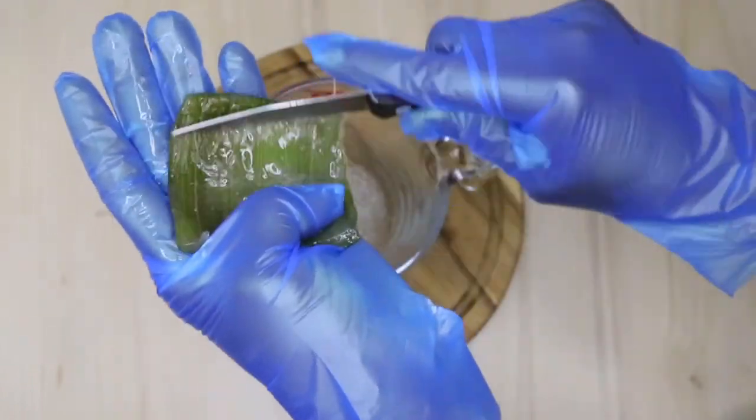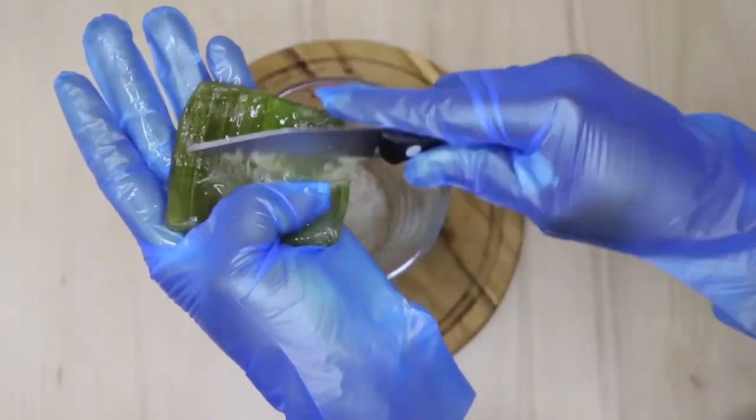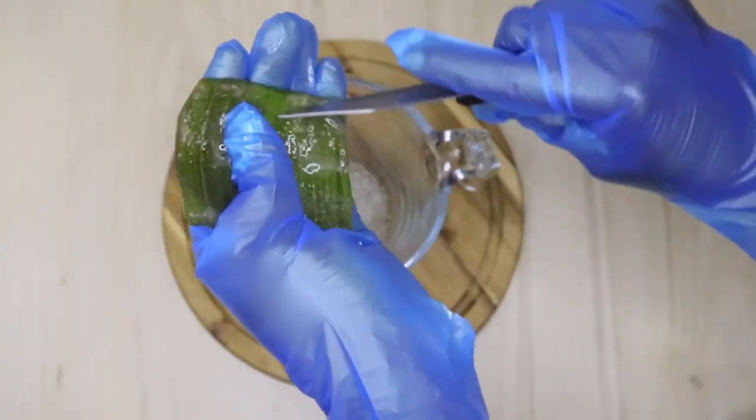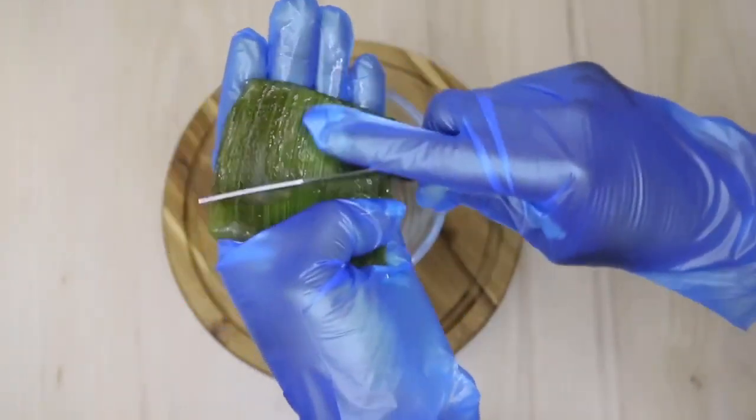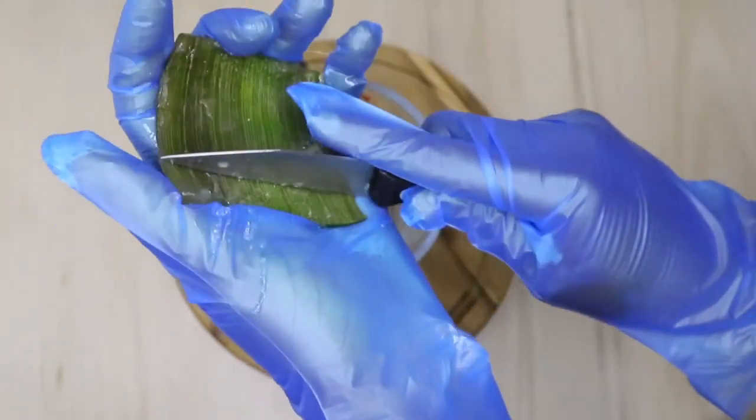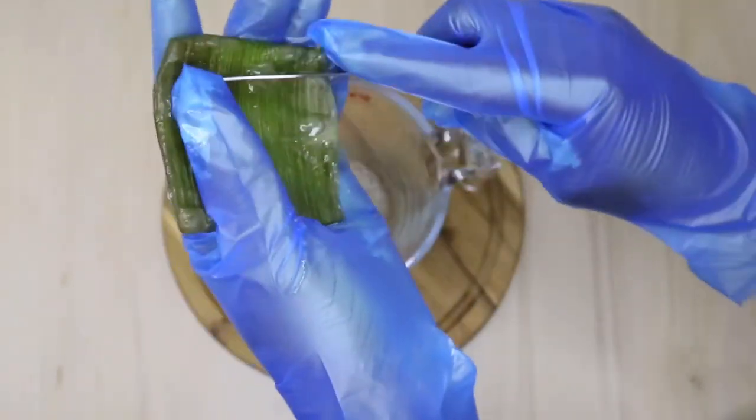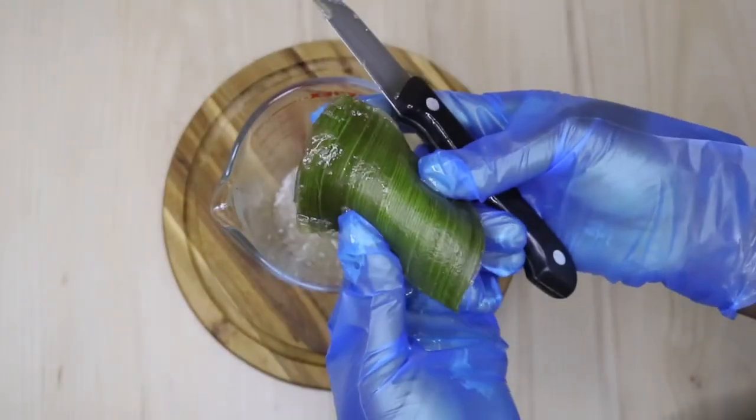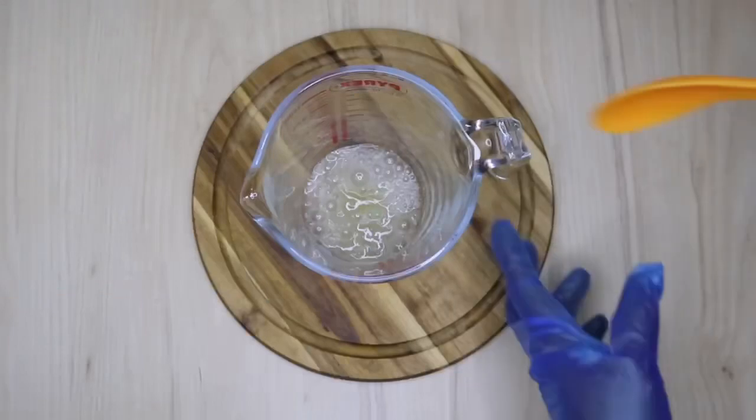If you blend it, it will turn liquid and your shampoo will act just like water. But if you want to make your own gelling base you can do the same. This is just a simple DIY for everybody.